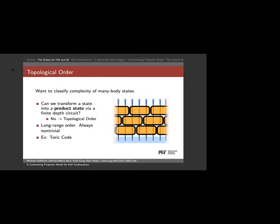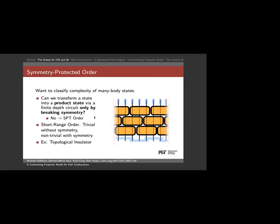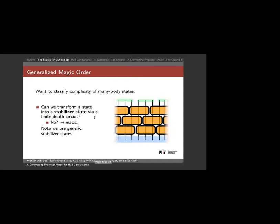To summarize: if I can't unwind the state at all, it's topologically ordered. If I can unwind it but only by breaking a symmetry, it's SPT order — and that's where we'll be today. There's one more classification: does this state have magic? Can I deform it into a stabilizer state via a finite depth circuit using a generic commuting projector model? If no, it's magic; if yes, I'll call it 'muggle.'